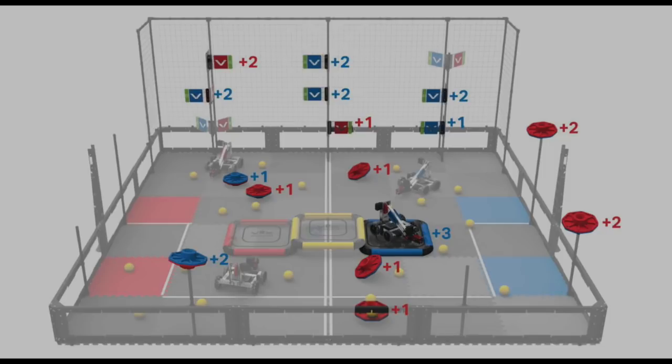So there are these caps, which are essentially little discs with a cylinder through the center. One side is blue and one side is red. You want your color to be facing up. You get one point if it's facing up and it's on the floor, and you get two points if it's facing up and it's on the poles. There are several poles surrounding the arena, and if you can get it on top of one of those, you get two points if your color is facing up.